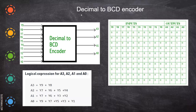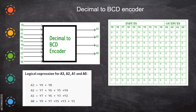The next one we are going to see is the decimal-to-BCD encoder. The previous one was octal-to-binary. Now, when I say decimal, it is 0 to 9, and BCD gives a 4-bit output, from 0000 to 1001. BCD stands for Binary Coded Decimal and is different from pure binary. Since we need to represent 8 and 9, we require 2-power-4, not 2-power-3, giving up to 16 combinations.